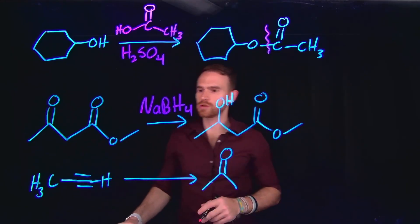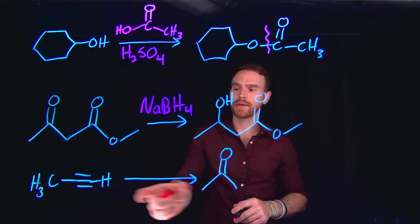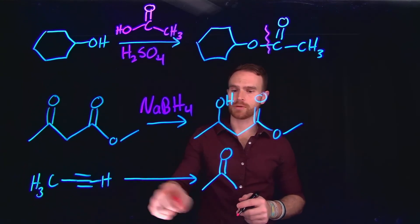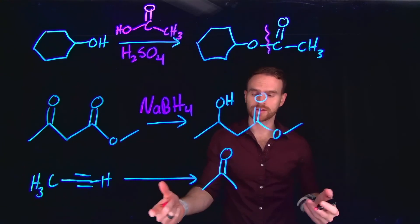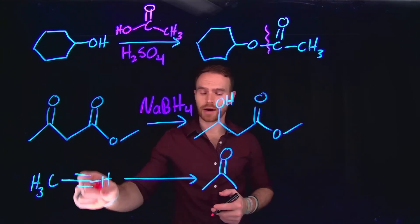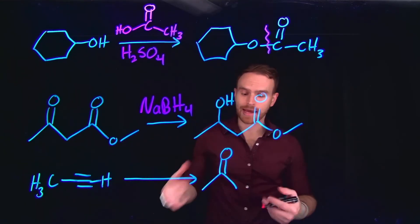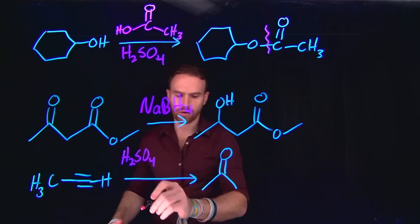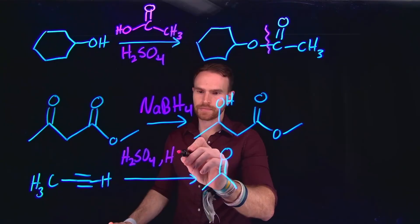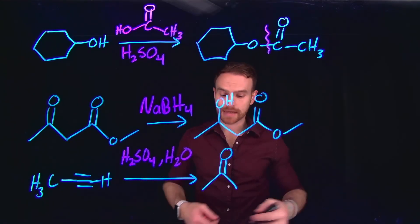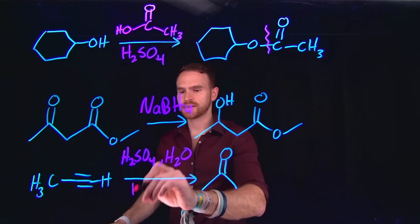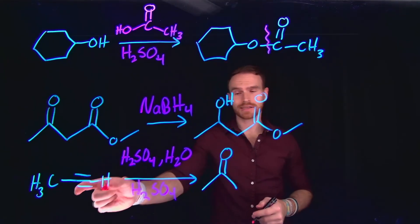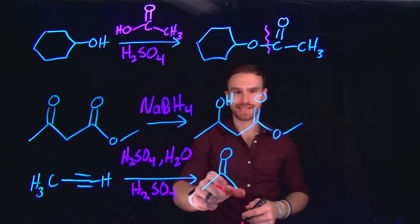Finally, we need to look at transforming an alkyne into a ketone. Notice the number of carbons isn't changing — three carbons in the reactant, three carbons in the product — but we're turning the alkyne into a ketone. In order to do that, we need H2SO4 in the presence of water, and then additional sulfuric acid during workup. H2SO4 with water is the way we can oxidize alkynes into ketones.